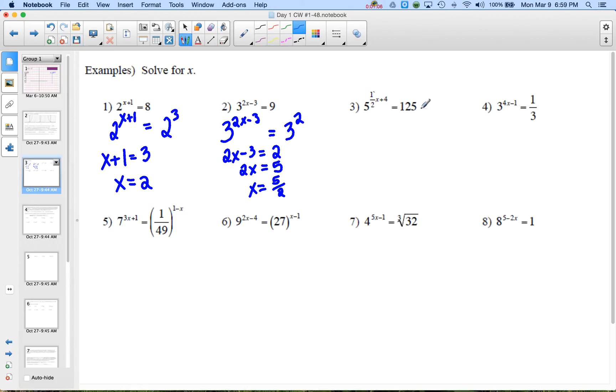All right, on the next problem, my common base would be 5, again I don't do anything to change the left-hand side, so I leave this, but 125 is 5 cubed. So now I have 1 half x plus 4 equals 3, so 1 half x equals negative 1. To undo multiplying by a half, we can multiply by 2, multiply both sides by 2, and we get x equals negative 2.